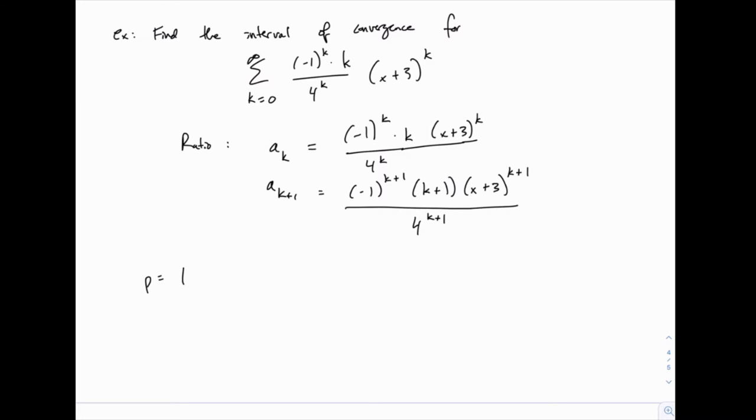Then the value of p will be the limit as k goes to infinity of the second divided by the first, a sub k plus 1 divided by a sub k. So we'll have negative 1 to the k plus 1 times k plus 1 times x plus 3 to the k plus 1, divided by 4 to the k plus 1. And then to divide by the first line, I'm going to multiply by the reciprocal again, so I'm going to multiply by 4 to the k over negative 1 to the k times k times x plus 3 to the k.